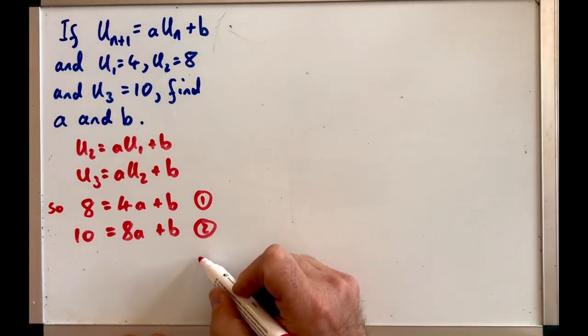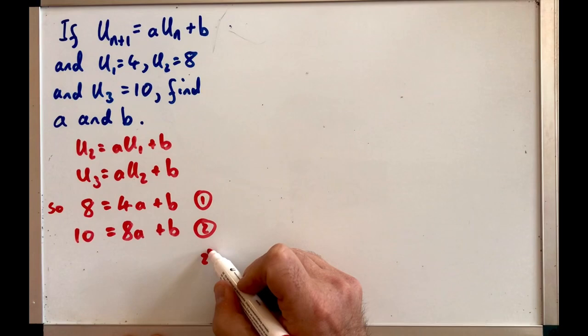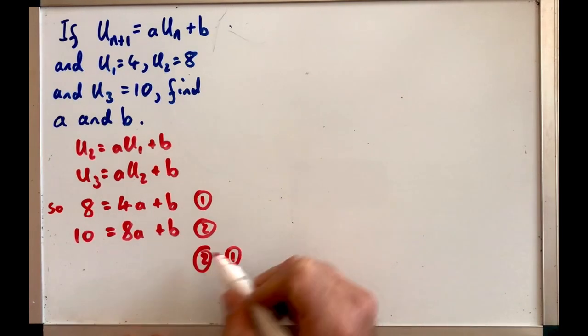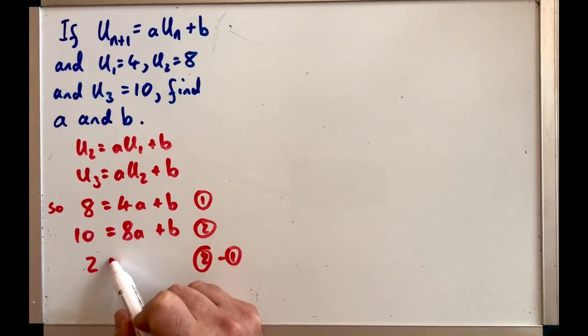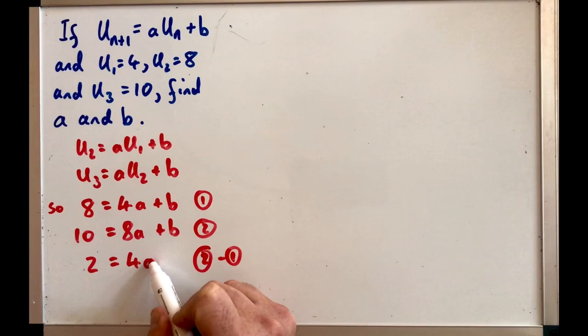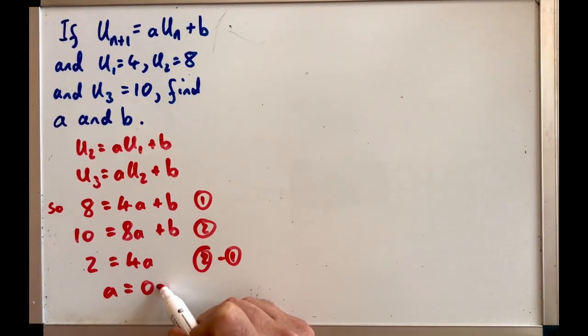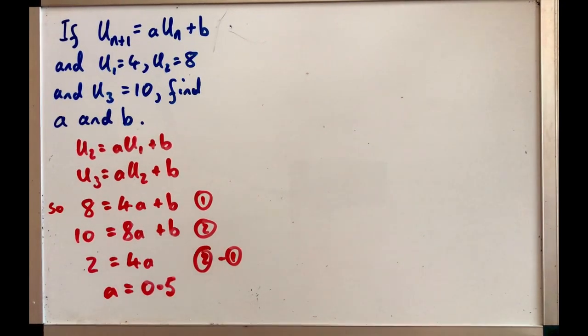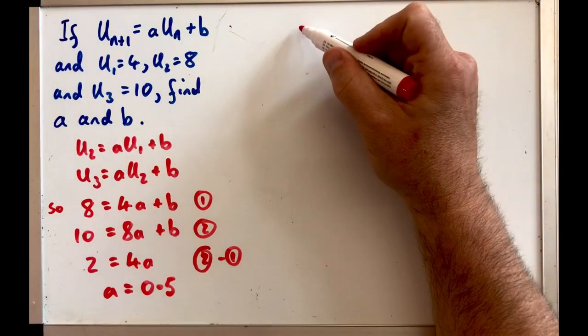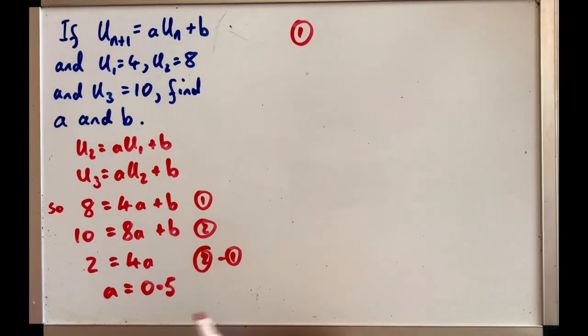That's just plugging in what U₁, U₂ and U₃ are. So simultaneous equations, first step I'm going to do equation 2 minus equation 1 and we get 2 equals 4a, so from that you can see that a equals 0.5.